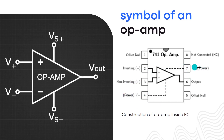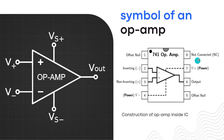Here we connect the V+ to the operational amplifier, and here we connect the ground. Then we have the offset null pins, which we will talk about later. Pin number eight is not connected to anything — it's just for the symmetry of the IC.